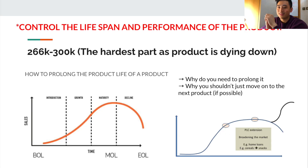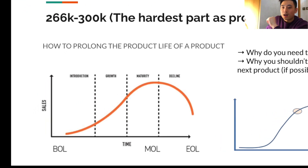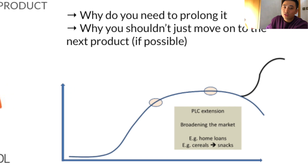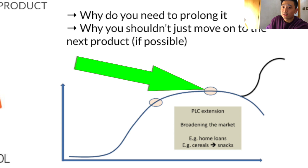This is a product life cycle graph. On the x-axis, when you first introduce a product into the market it gains traction, enters the growth phase, then the maturity phase, and then starts to decline. The y-axis represents the number of sales. I'm actually right at the point now where I'm starting to get into that decline phase.